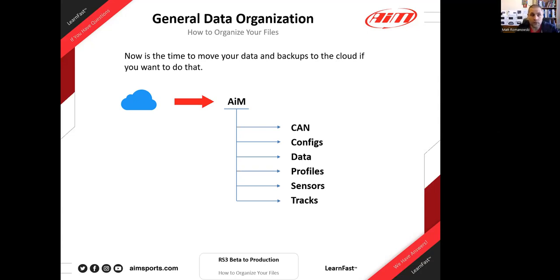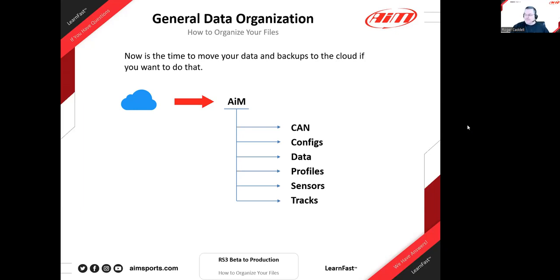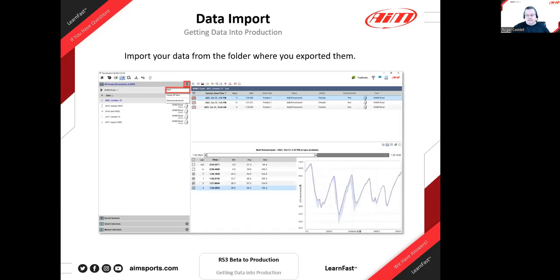If you don't want to use a cloud service, just create that organized folder structure locally — the process is the same, the location just changes. Folder names can be called anything you want, and you can put them anywhere. The key idea is the architecture itself.